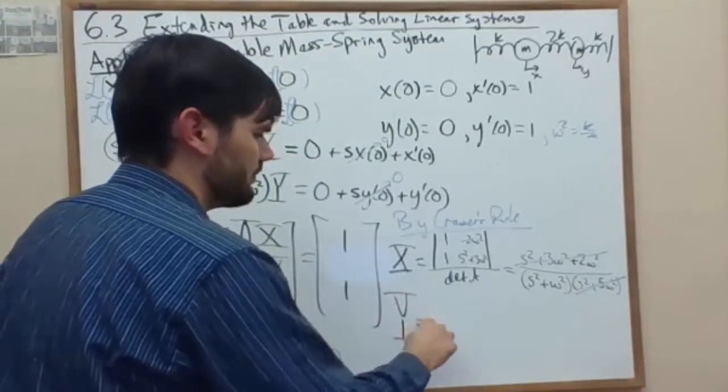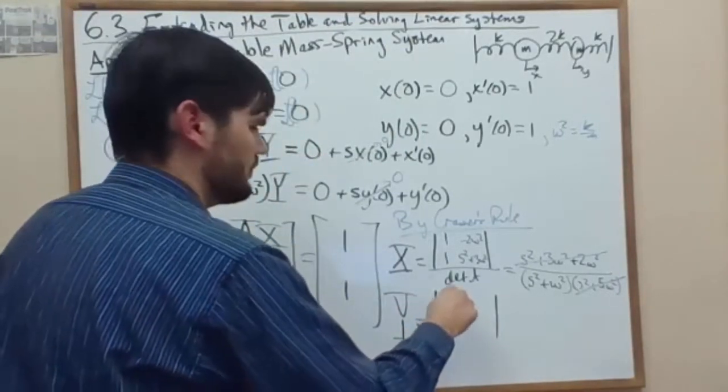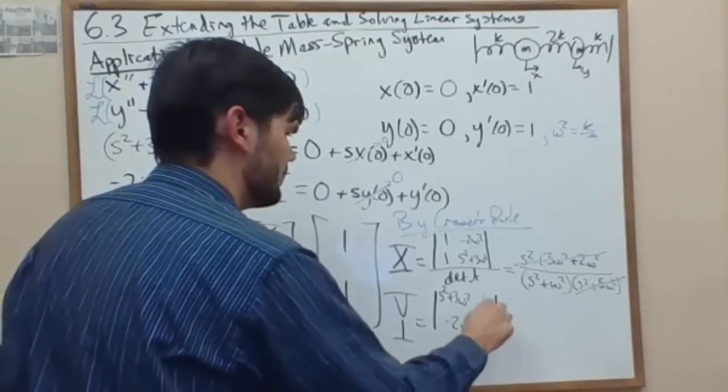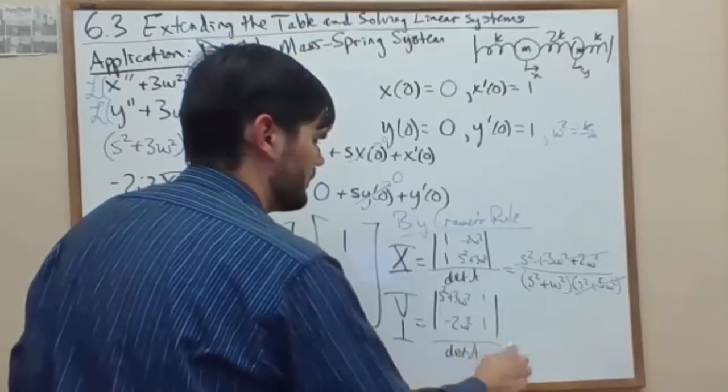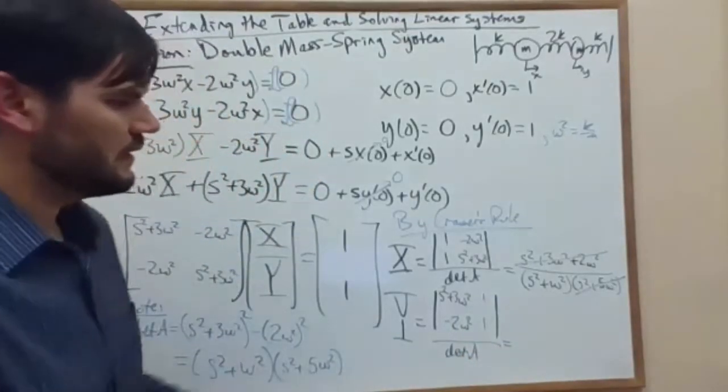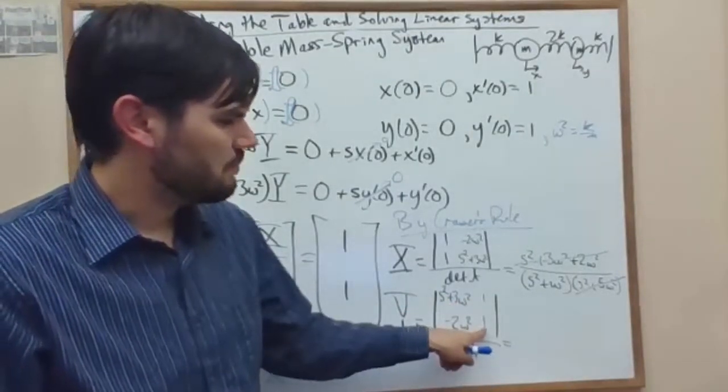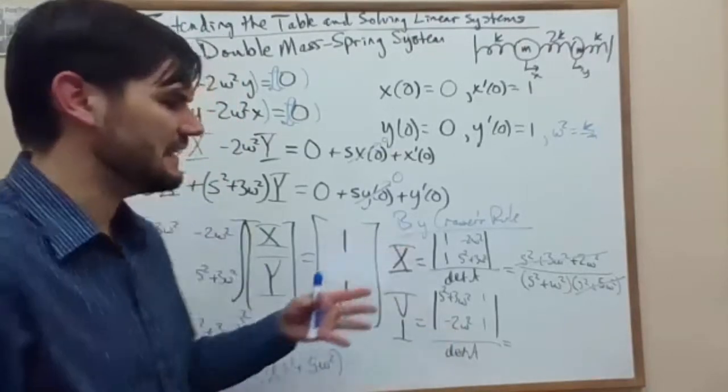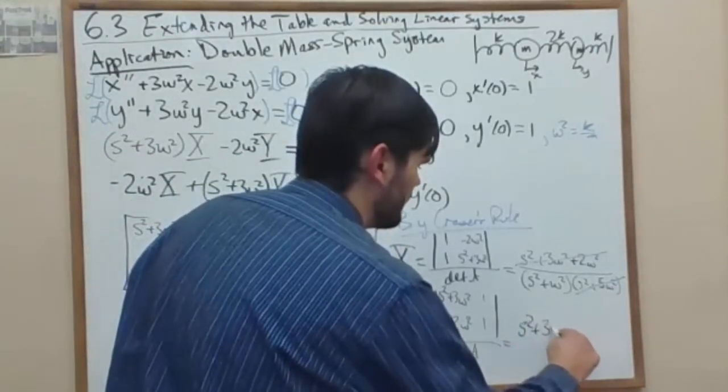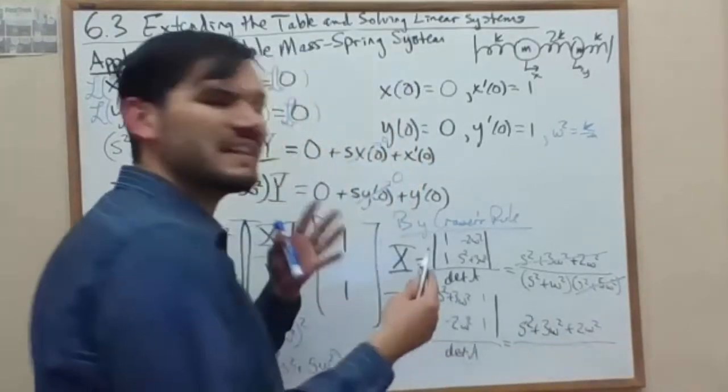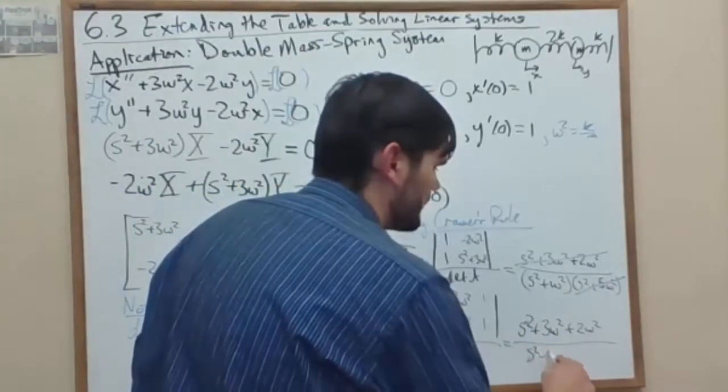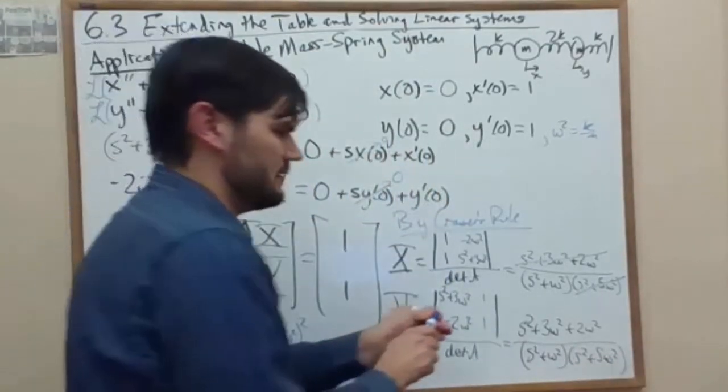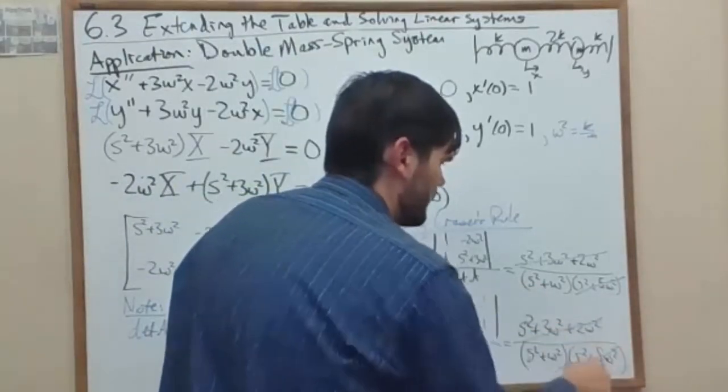Now solve for Y. Here, we get the s squared plus 3 omega squared times 1. It's the same thing. We're subtracting a negative 2 omega squared so we're adding it. We get that s squared plus 3 omega squared plus 2 omega squared. We're dividing by the same denominator, s squared plus omega squared times s squared plus 5 omega squared. And again, we cancel out one of the pieces.